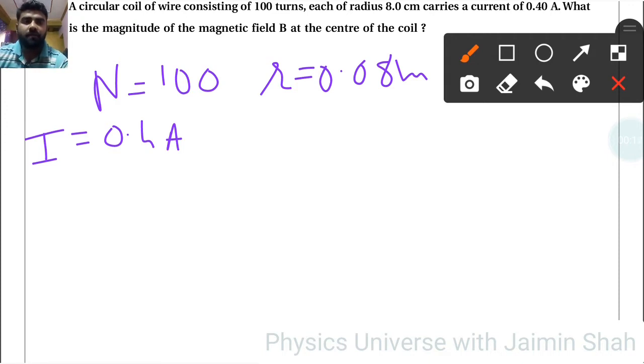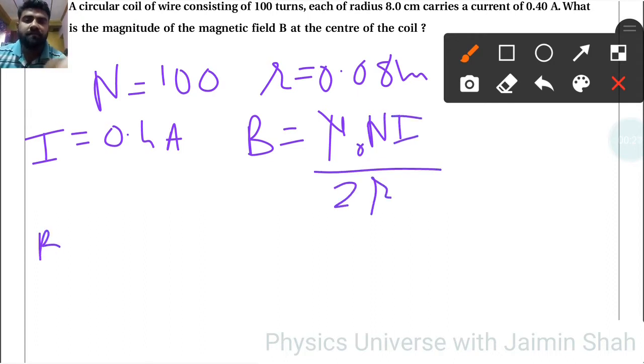The formula for that is B equals mu naught N I upon 2R. So B equals 4 pi times 10 to the minus 7 times 100 times 0.4 upon 2 times 0.08.